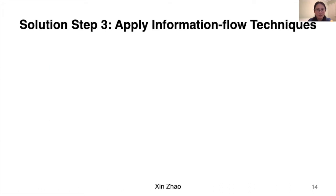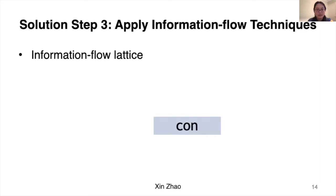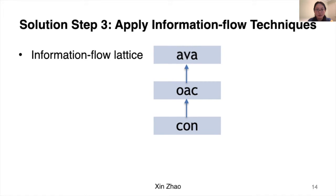In our work, we apply information flow techniques, popular in computer security, to the distributed programming field. We can order labels in an information flow lattice, where high labels cannot affect lower labels. Intuitively, the available label will be at the top because we want to avoid flow from inconsistent data to consistent data — so the higher in the lattice, the weaker the consistency model. We add the local label at the bottom of the lattice to keep the lattice structure simple for later reasoning.